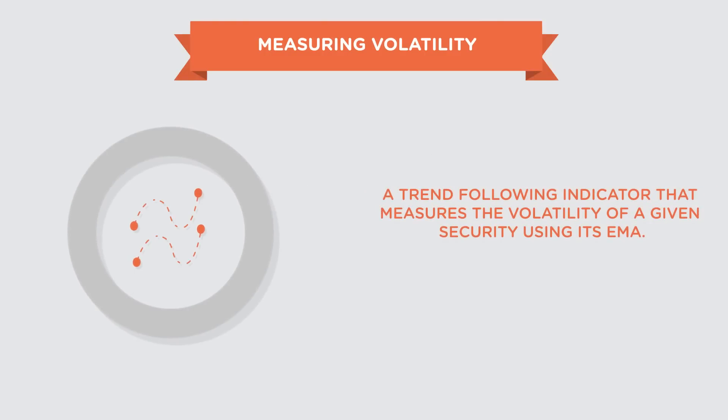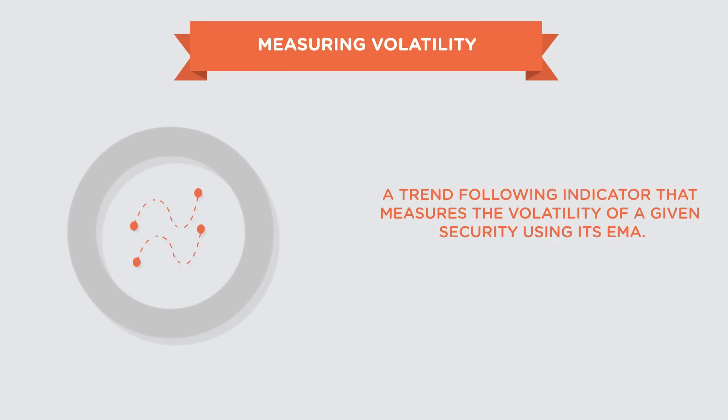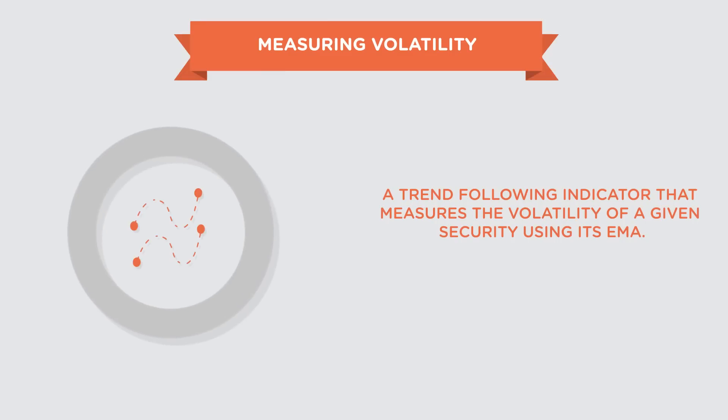John Bollinger developed the indicator in about the 1980s. It's a trend-following indicator that measures the volatility of a security using the EMA and its standard deviations. In normal English, the Bollinger Bands are basically a great way to see market volatility and are overlaid straight over price.